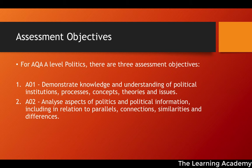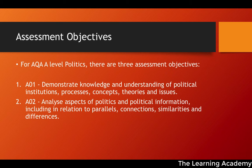The second assessment objective is to analyse aspects of politics and political information, including in relation to parallels, connections, similarities, and differences. So it's not only about describing and producing information as in AO1, but also explaining why the knowledge you're using is relevant and how similarities and differences exist between different things. This is very important in the comparative politics section — for example, giving knowledge about parliament and then about Congress, and then using AO2 to explain why they're different and analyse the similarities between the two systems.